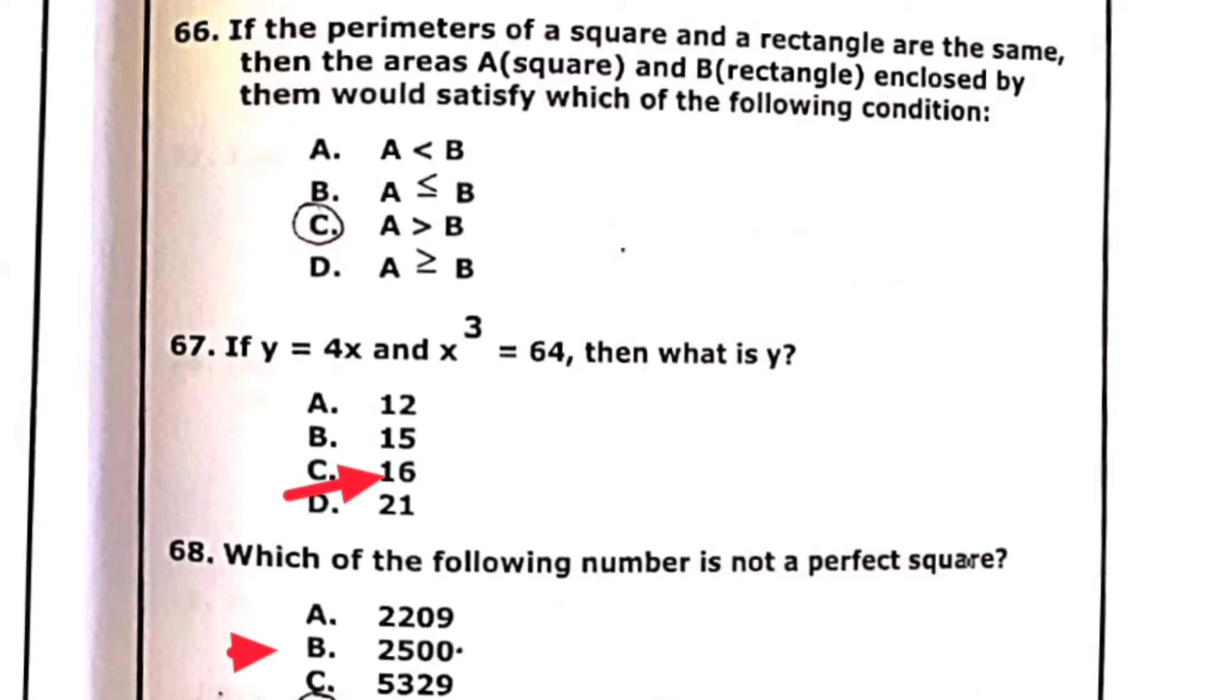Question 66: if the perimeter of a square and a rectangle are the same, then the areas square and B rectangle enclosed by them would satisfy the condition C is correct.